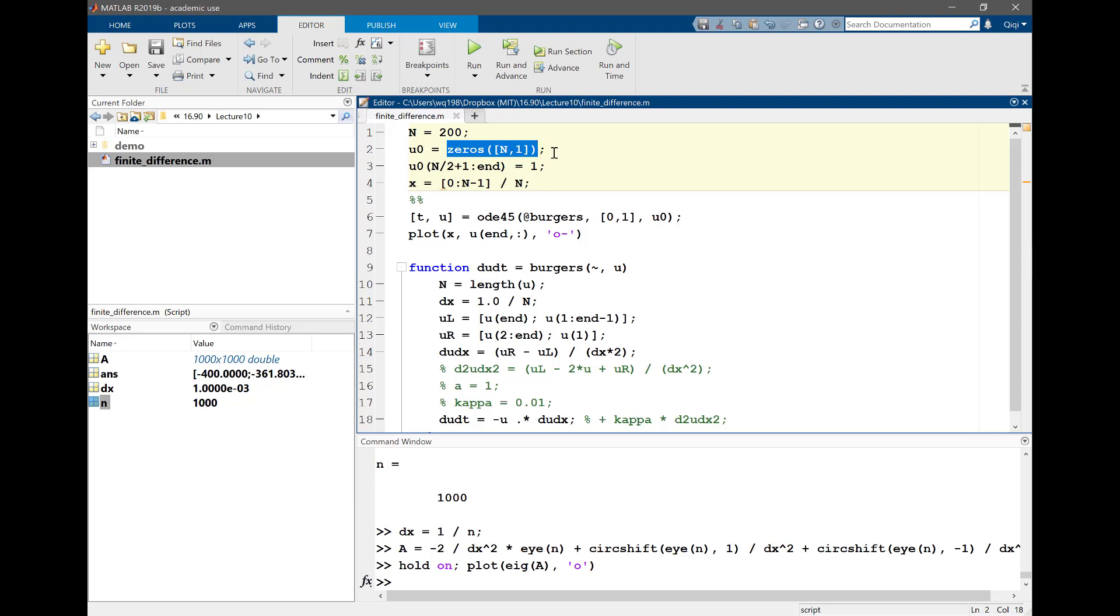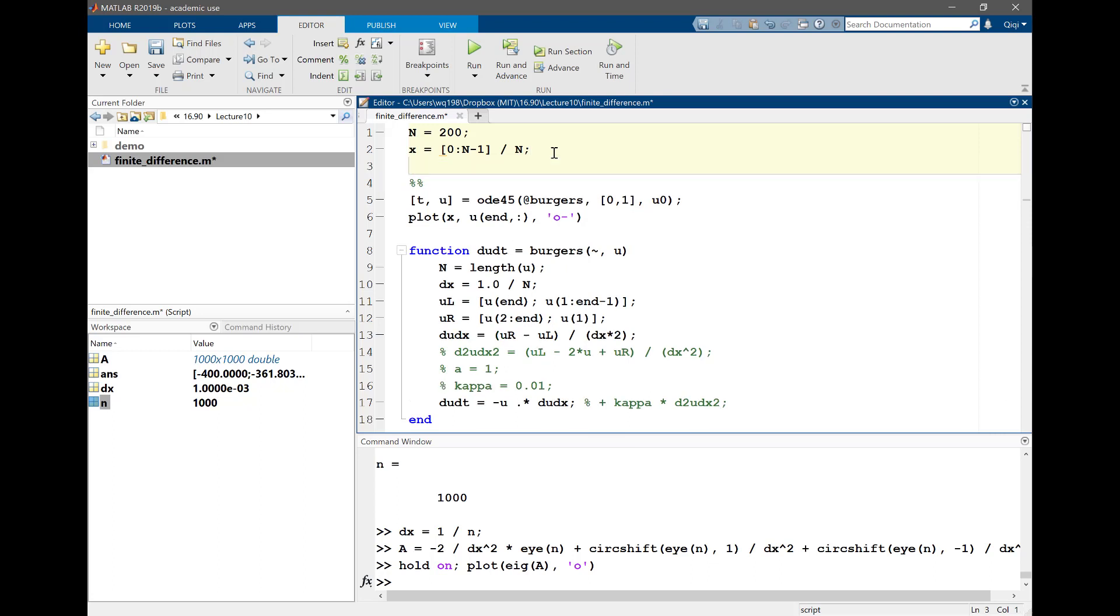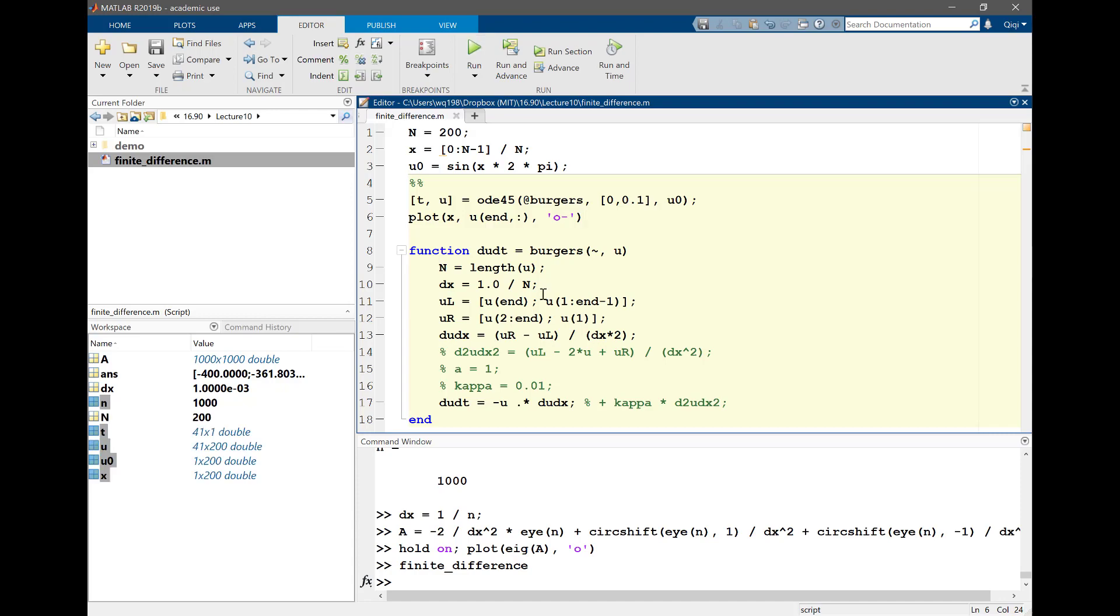I have n equal to this, and my u0 is, let me first figure out what is my x. My x is this, and I'm going to set my u0 corresponding to x. u0 is going to be sine of x times 2 times pi, how about that. So I have a sinusoidal wave. And let's actually evolve this for only a little bit. And I'm going to plot it. So let's do this first and look at what the solution looks like.